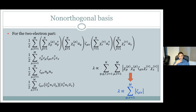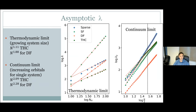The value of lambda we get is quite close to double factorization for FeMoco, and things look even better for larger systems. In the thermodynamic limit — the growing system size — the tensor hypercontraction line at the bottom fits to N to the 1.11, whereas double factorization scales like N to the 1.88. There's also better scaling in the continuum limit shown on the right, though not such a large improvement. For the size being simulated, double factorization actually has a slightly smaller lambda value.